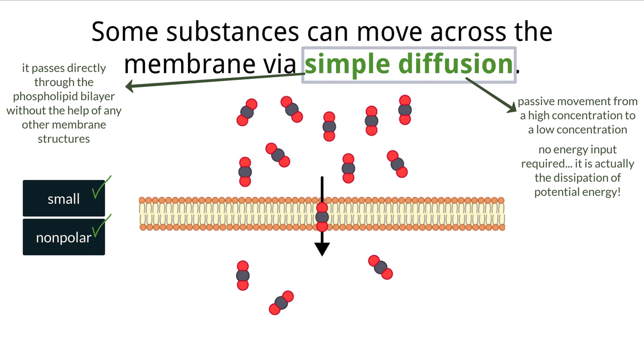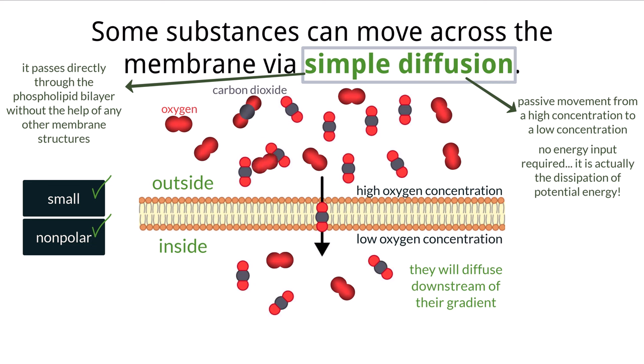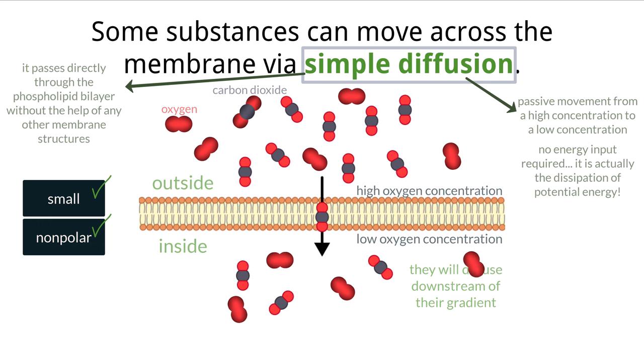You need to know two examples of simple diffusion for the IB exam: the movement of oxygen and carbon dioxide. Both O2 and CO2 are small and nonpolar. If there is a concentration difference between these molecules when comparing their abundance both inside and outside of the cell, they will passively diffuse through the cell membrane via simple diffusion downstream of their concentration gradient. So if the aqueous solution outside of the cell had a high amount of oxygen relative to the inside, the oxygen would diffuse in.